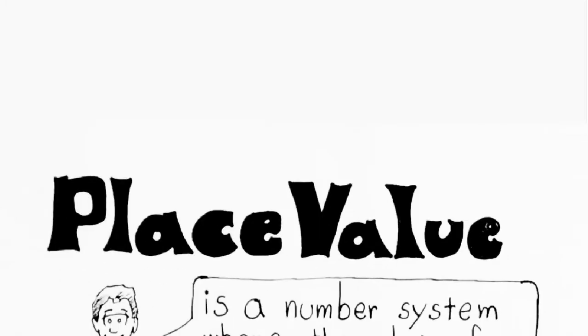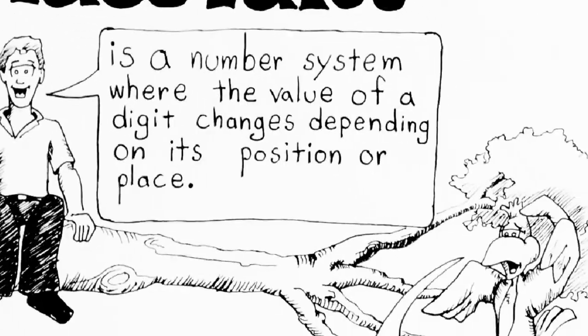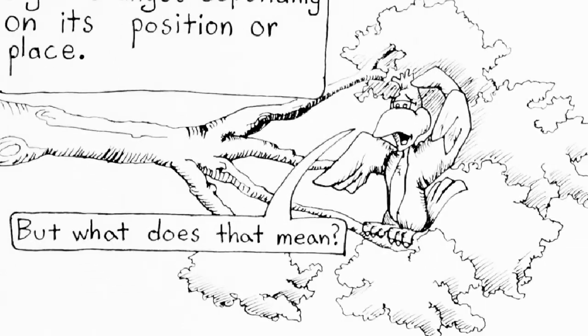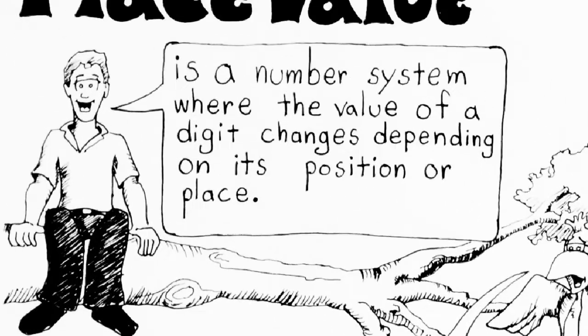Welcome to the place value video. Today we're going to learn about what place value really means. Place value is a number system where the value of a digit changes depending on its position or place. That's the definition of place value, but what does that mean exactly?